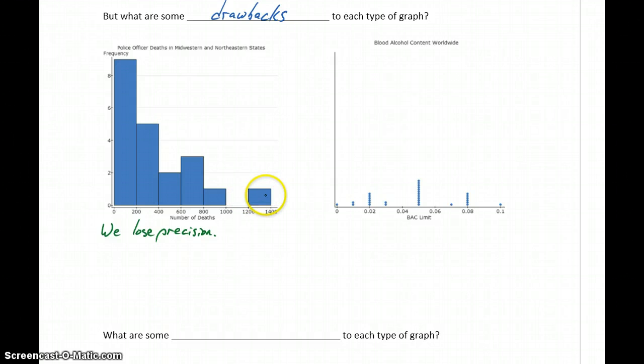That could be 1,201, it could be 1,350, it could be 1,300. As soon as we convert things into a histogram, we lose the precision, the specificity of those individual numbers.